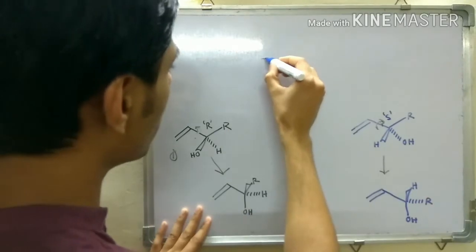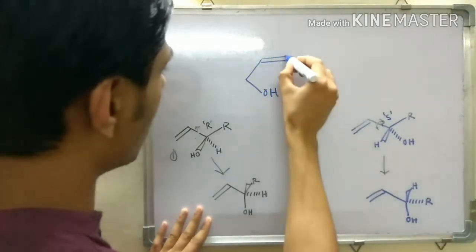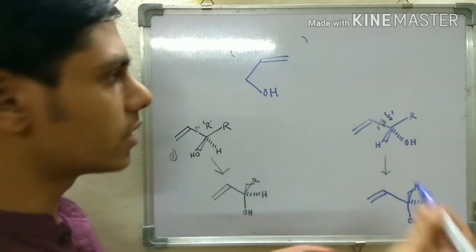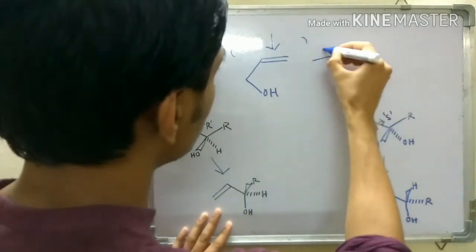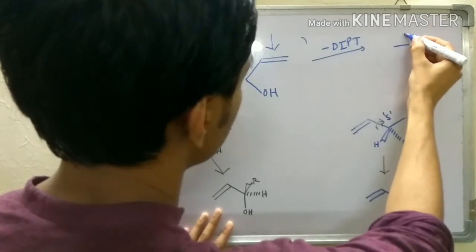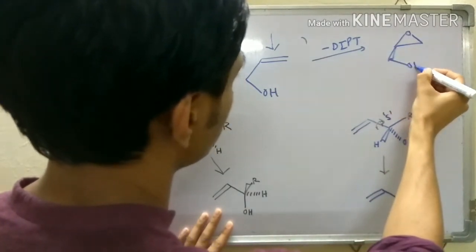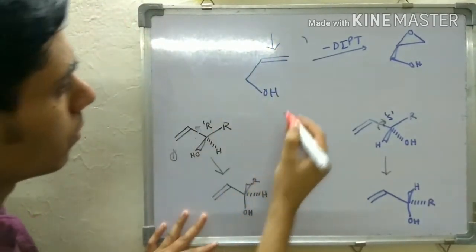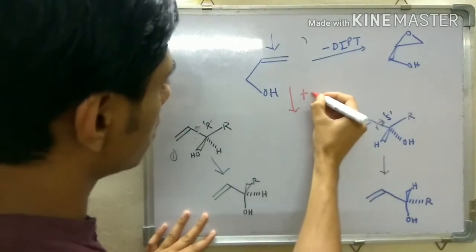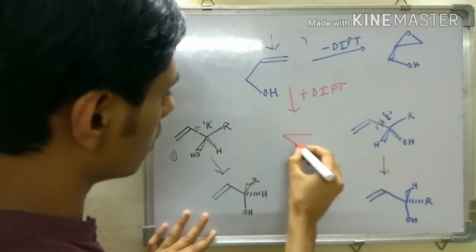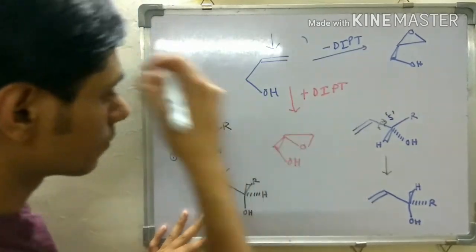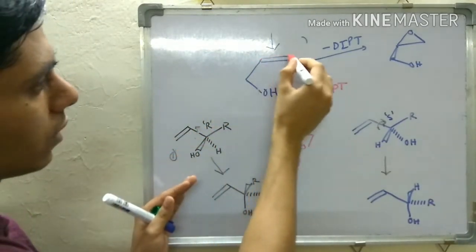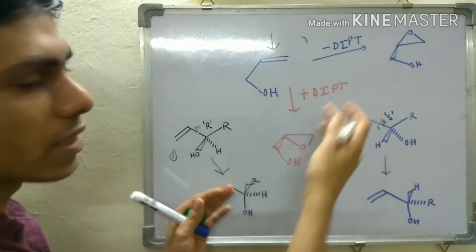When we discuss Sharpless epoxidation conditions, we have a mnemonic: if we have an allylic alcohol in this particular form, then if we use (-)-DIPT it will attack from the above face. So if we use (-)-DIPT we will get this product. And if we use (+)-DIPT — actually this will not be feasible — so if we use (+)-DIPT you will get this product.